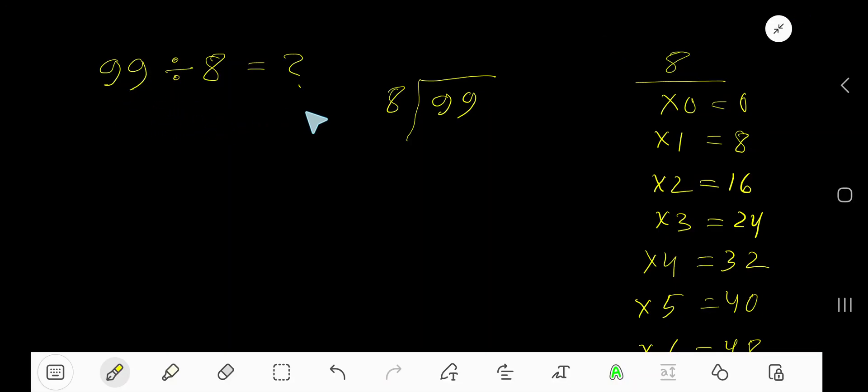99 divided by 8. Here 8 is the divisor, so we need the multiplication table of 8. 8 times 0 is 0, 8 times 1 is 8, 8 times 2 is 16, 8 times 3 is 24, 8 times 4 is 32.